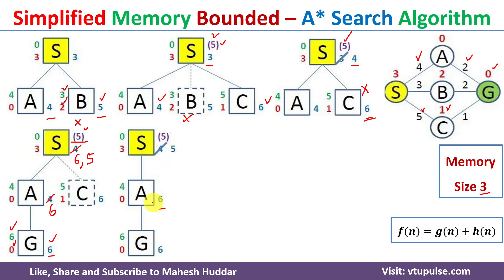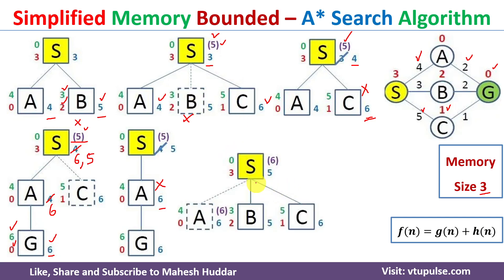Since A's f-value (6) is greater than the forgotten node's f-value (5), we remove A from memory. A is recorded as a forgotten node of S with f = 6 (since G is A's child). Memory now contains S, B, and C. B is the most promising node and C is the other candidate — from these two we may reach the goal node with minimum cost.